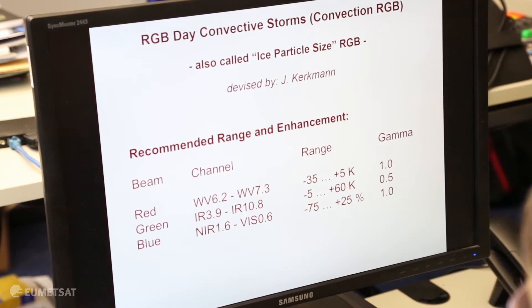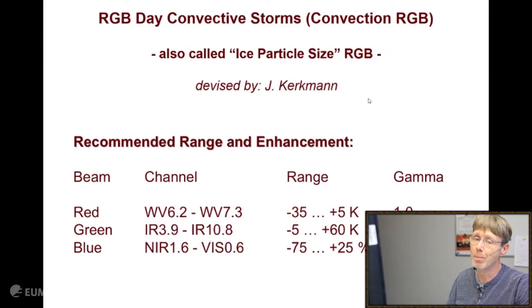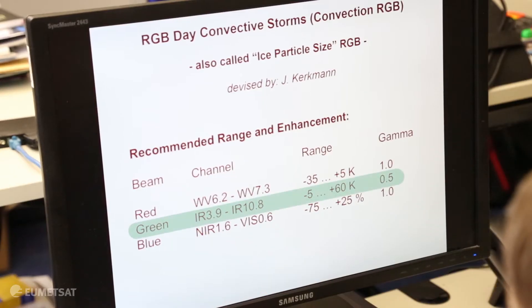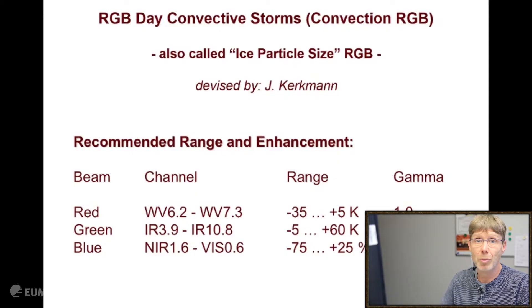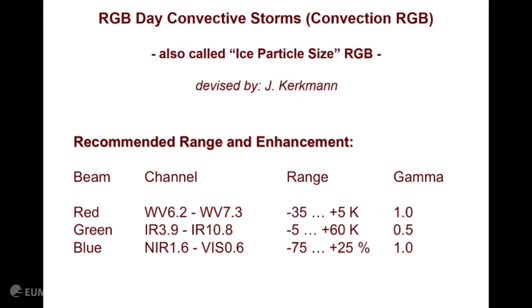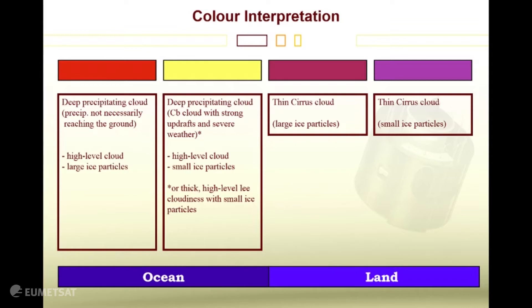The recipe of this RGB product is now displayed on screen. The important thing is the green component, which is the 3.9 minus 10.8 channel difference. This is the component needed to detect cloud particle size, which is the main application of this RGB product. On the next slide we see the color interpretation. There are not many colors: low ground and ocean are bluish colors, and then we have red and yellow for high cold ice clouds. Red is for large ice particles and yellow for small ice particles. The three most important colors are blue, yellow, and red.